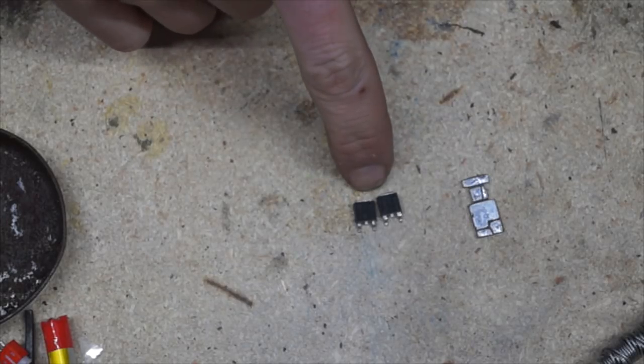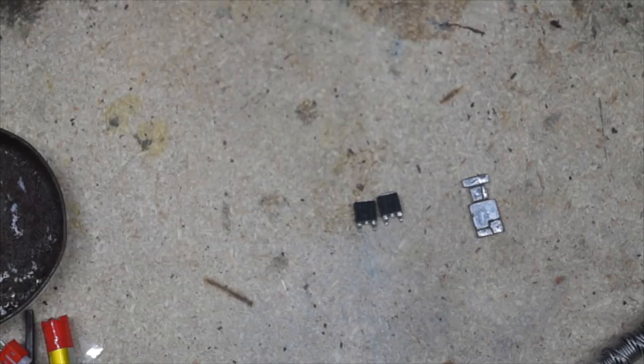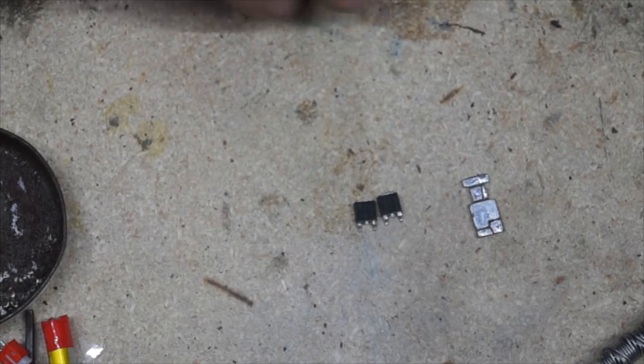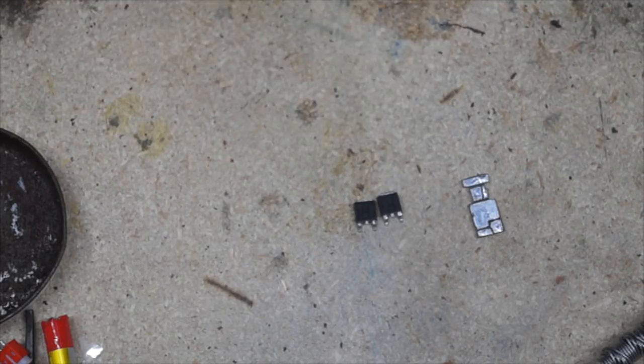These two MOSFETs are salvaged from Xbox motherboards. They can handle 62 amps at 25 volts while being under 8.4 milli-ohms. Of course, you don't need MOSFETs this powerful. Anything with at least a 10-amp rating at under 10 milli-ohms will work.